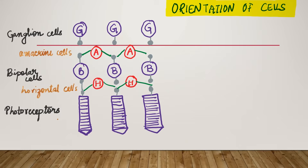Let us try to have a basic orientation towards Electrophysiology, specifically the Electroretinogram. We should have an idea regarding the orientation of the cells in the retina. If you are not very familiar with the layers of the retina, I would advise you to visit my video on layers of retina on the channel. Basically, we know that photoreceptors are connected to the bipolar cells, and bipolar cells finally send impulses to the ganglion cells.